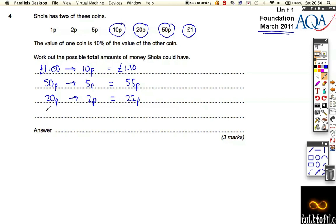Or the biggest coin in her hand could have been 10p, which means the other coin must have been 1p, and she has 11p.